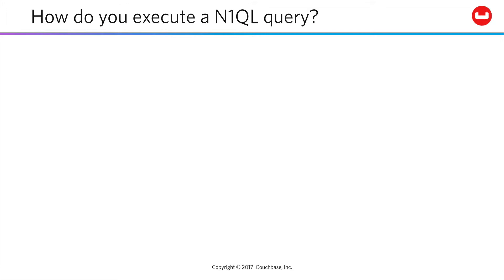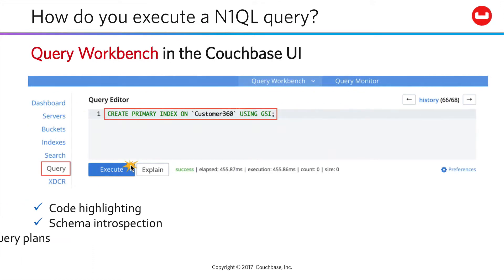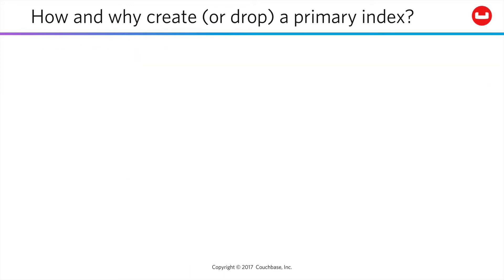To execute a N1QL query, you can use a command line tool called cbq. You authenticate to your cluster and execute N1QL queries from the command line. More likely, you're going to work with a tool called the query workbench through the Couchbase UI. This visual tool supports code highlighting, schema introspection for your data, and visual query plans.